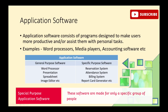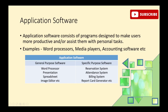Examples of specific purpose software include reservation systems, attendance systems, billing systems, and report card generators. For example, an attendance system is specifically used for taking attendance, and a report card generator is specifically used to generate report cards. Each specific purpose software is designed to do only one particular task.